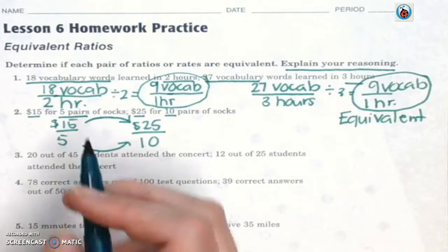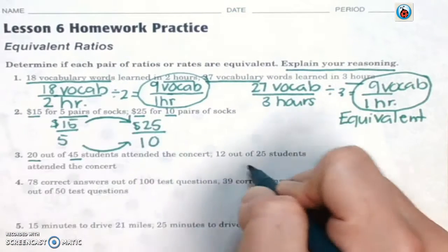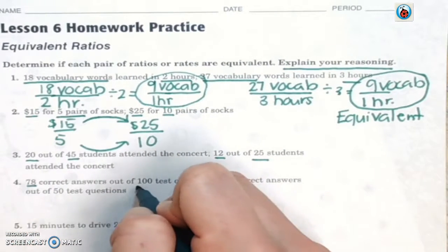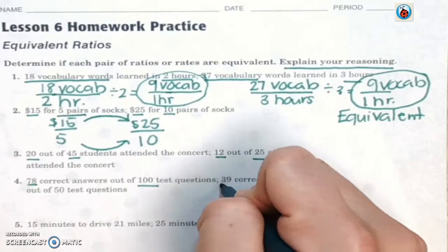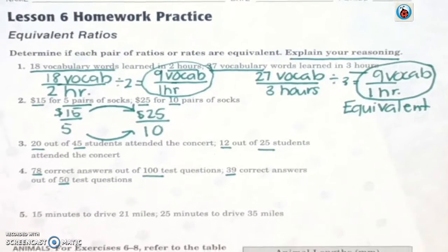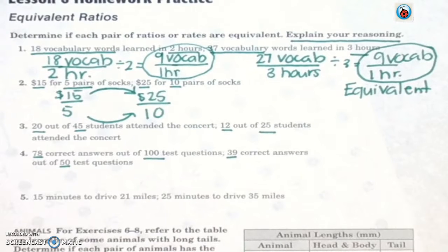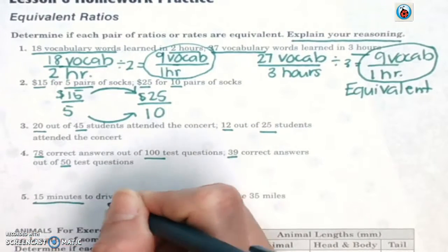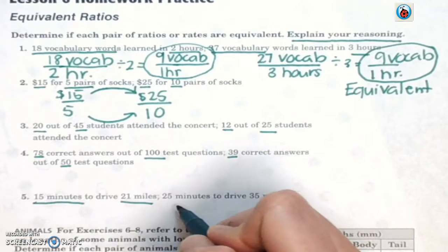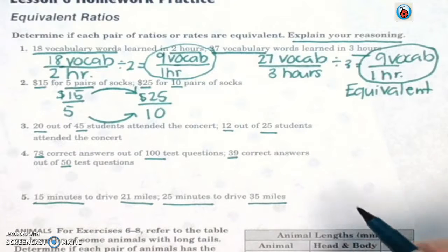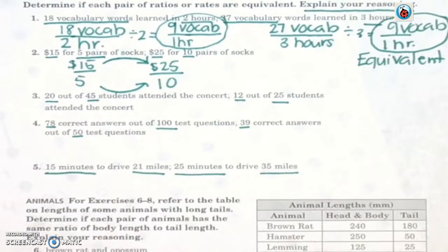The next one, make sure you're setting them up. It could be helpful to underline the things that you need to put in your problem. The first number goes on top, the second number goes on bottom. So this one, you have 15 minutes and 21 miles on one side, and then 25 minutes to 35 miles. Just try your best, and we'll be going over this when I get back.